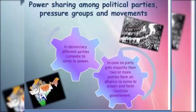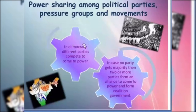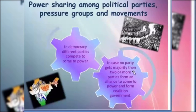The fourth form is power sharing among different political parties, pressure groups, and movements. In a democracy, different political parties compete in elections to come into power — there are many political parties like INC, BJP, NCP, and others. In case no political party gets a majority in the election, two or more political parties form an alliance to come into power, and this is known as a coalition government.